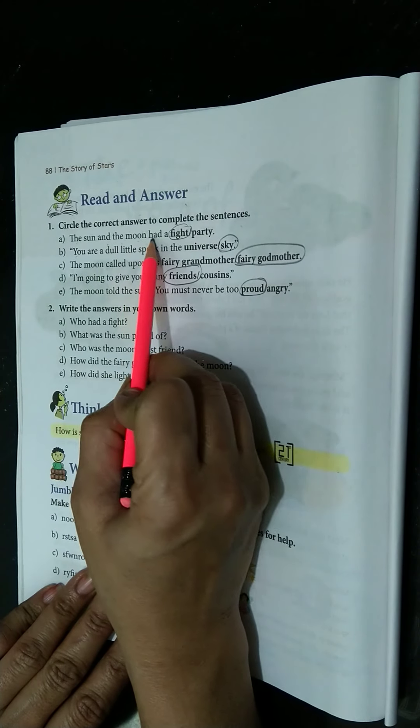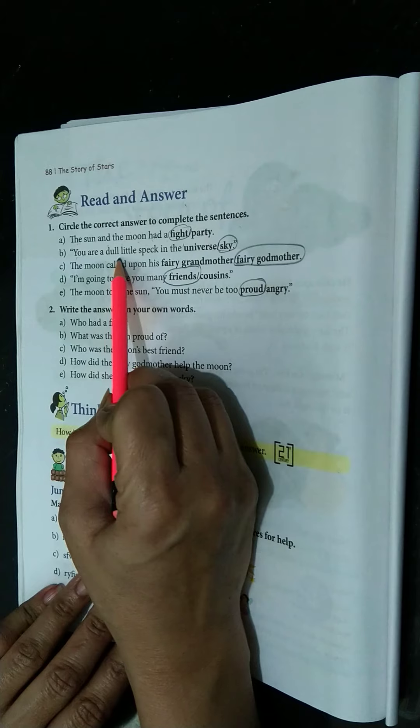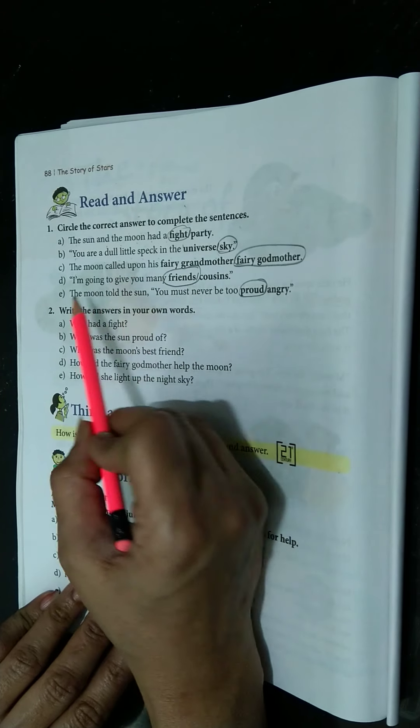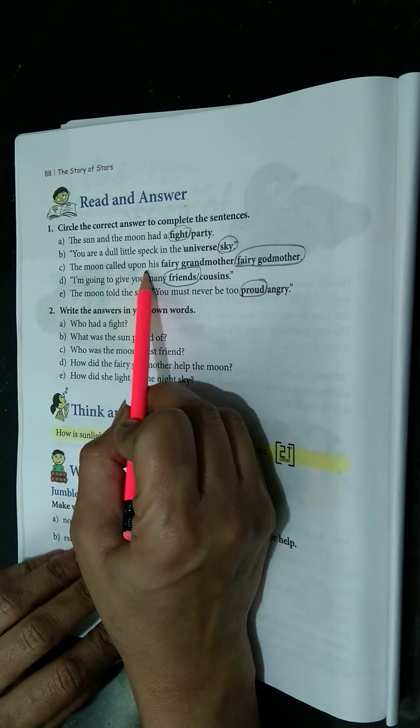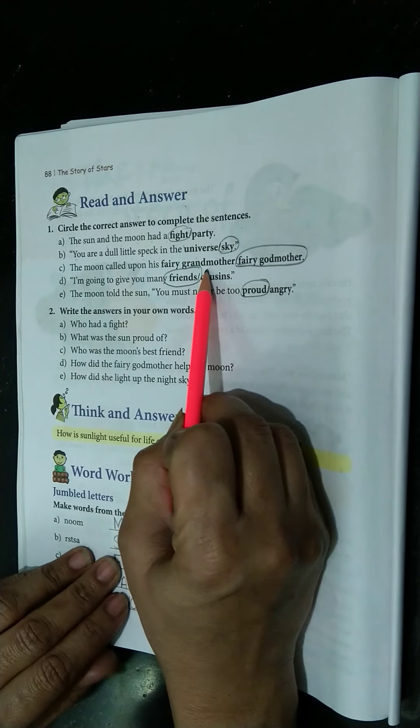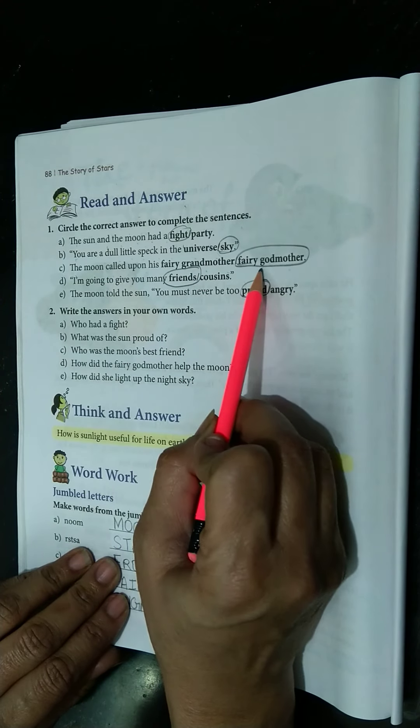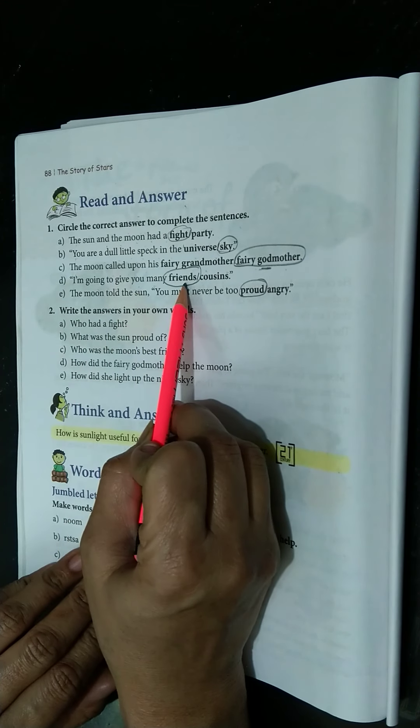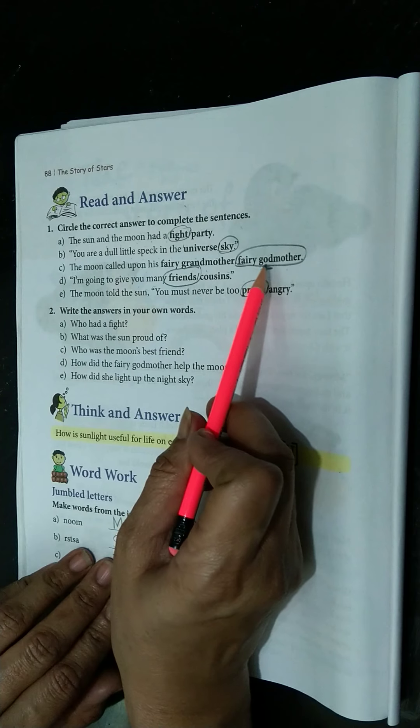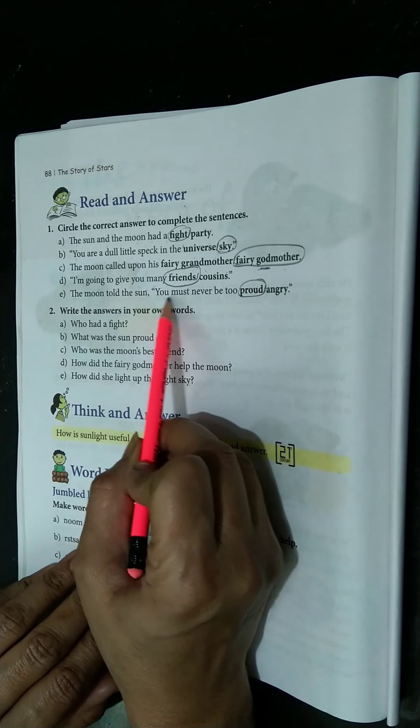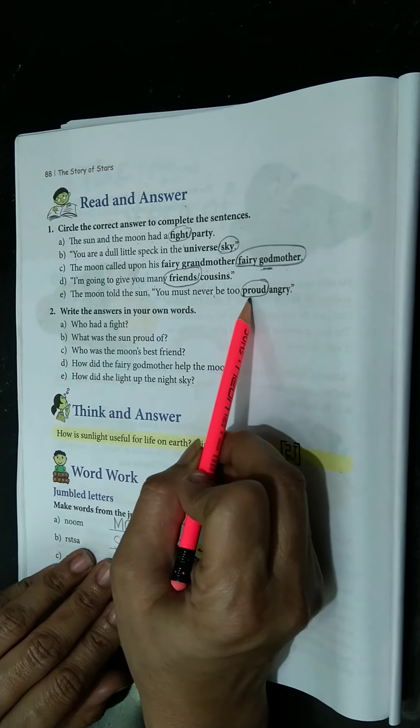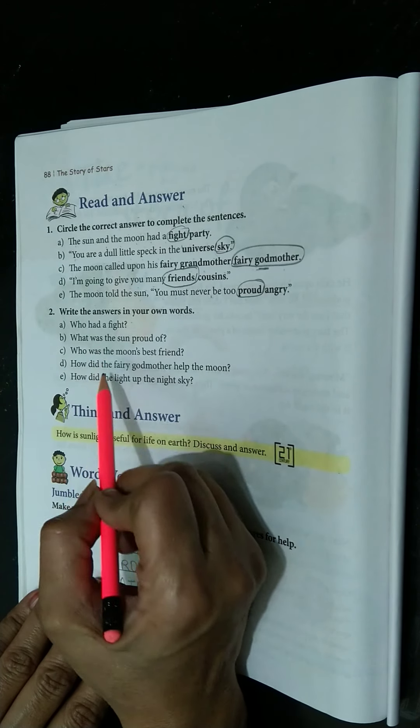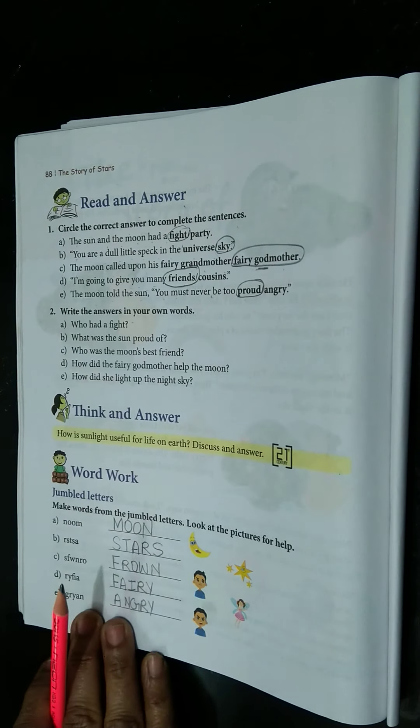The sun and moon had a fight. You are a dull little speck in the universe or sky. The moon called upon his fairy grandmother or fairy godmother. It was godmother. I am going to give you many friends. The moon told the sun, you must never be too proud. Answer the following in your words. So this we had just completed in the video.